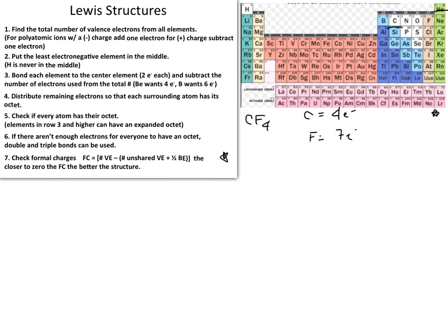We're not just asking for the valence electrons of individual elements; we need the total number of valence electrons in the molecule. We have to account for the actual number of atoms. According to our molecular formula, carbon has no subscript, implying there is one carbon.